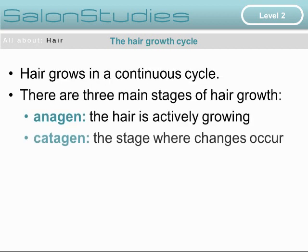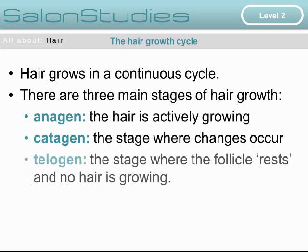The hair growth cycle. Hair grows in a continual cycle. There are three main stages of hair growth: anagen, which is the hair actively growing; catagen, the stage where changes occur; and telogen, the stage where the hair follicle rests and no hair is growing.